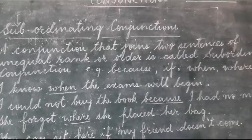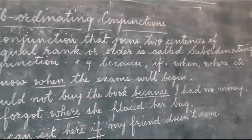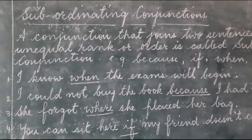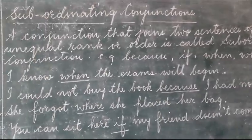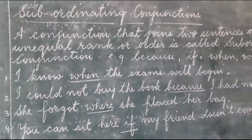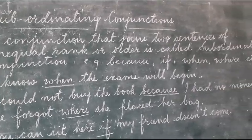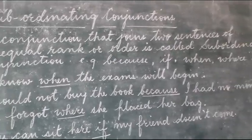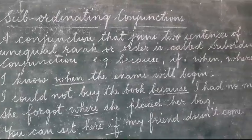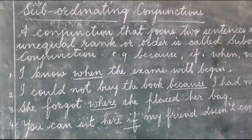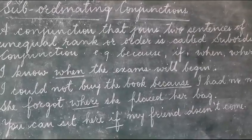Coming to subordinating conjunctions — a conjunction that joins two sentences of unequal rank or order is called a subordinating conjunction. Unequal rank means one of the sentences is incomplete if we read it out independently; it has to depend on the other sentence. This is what being unequal rank means.